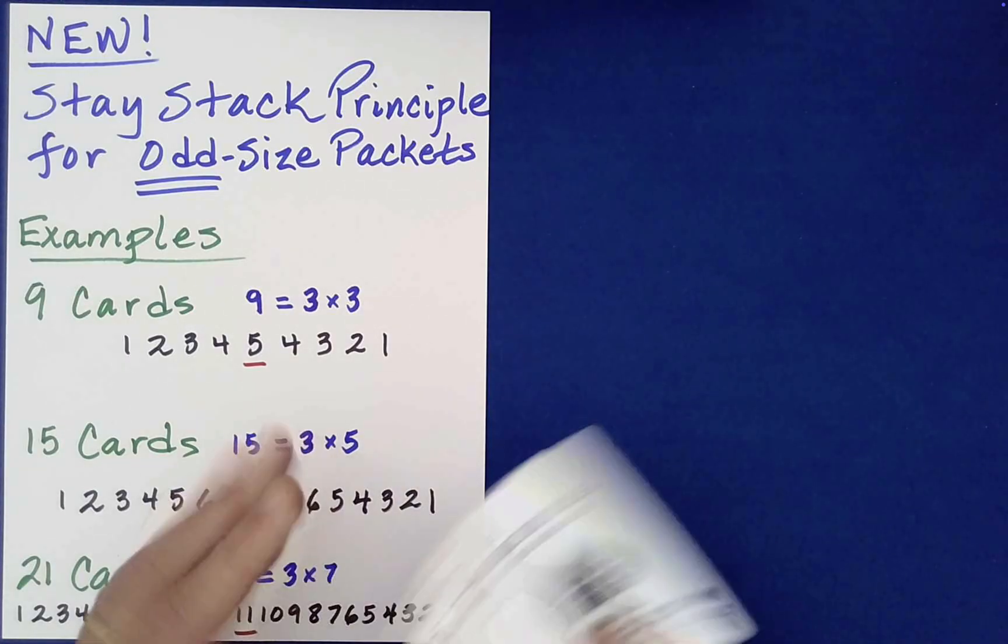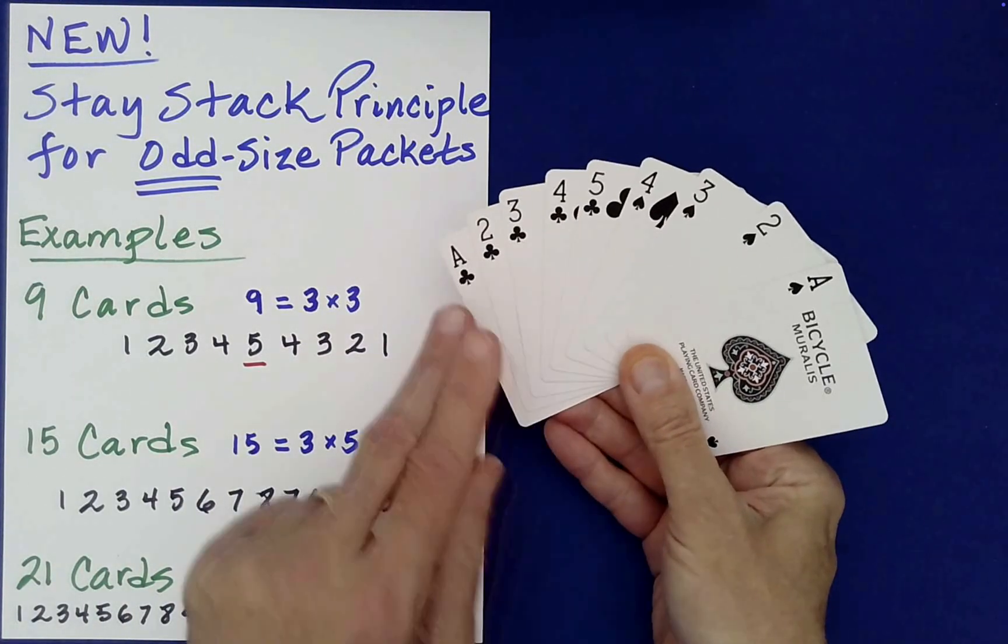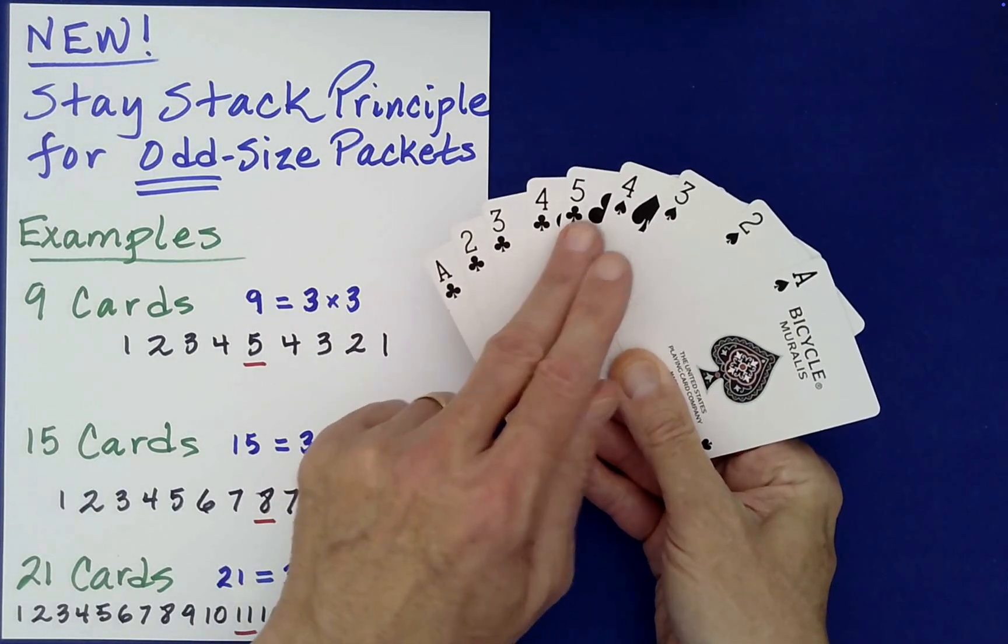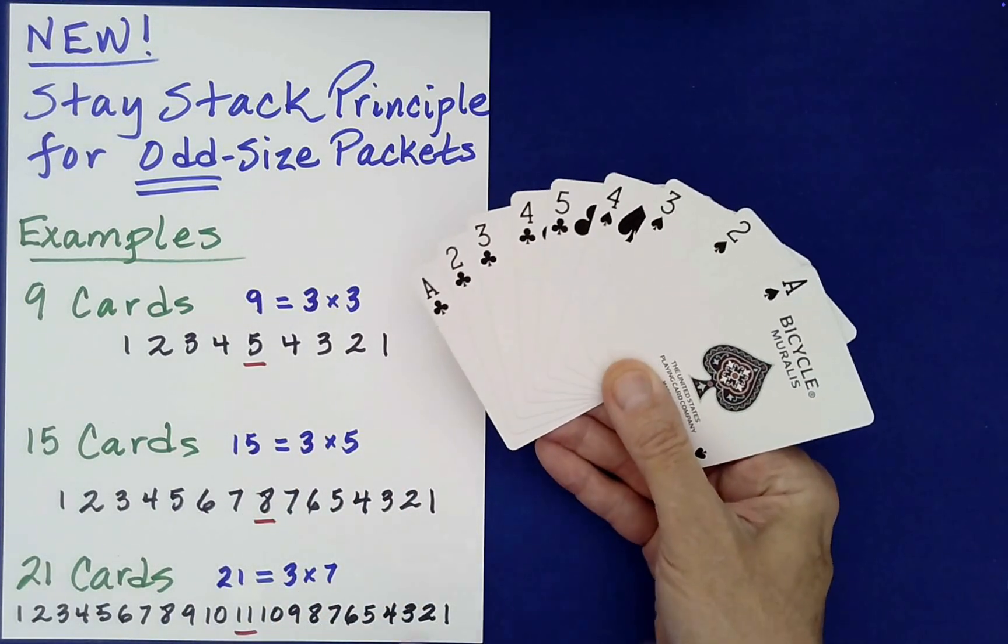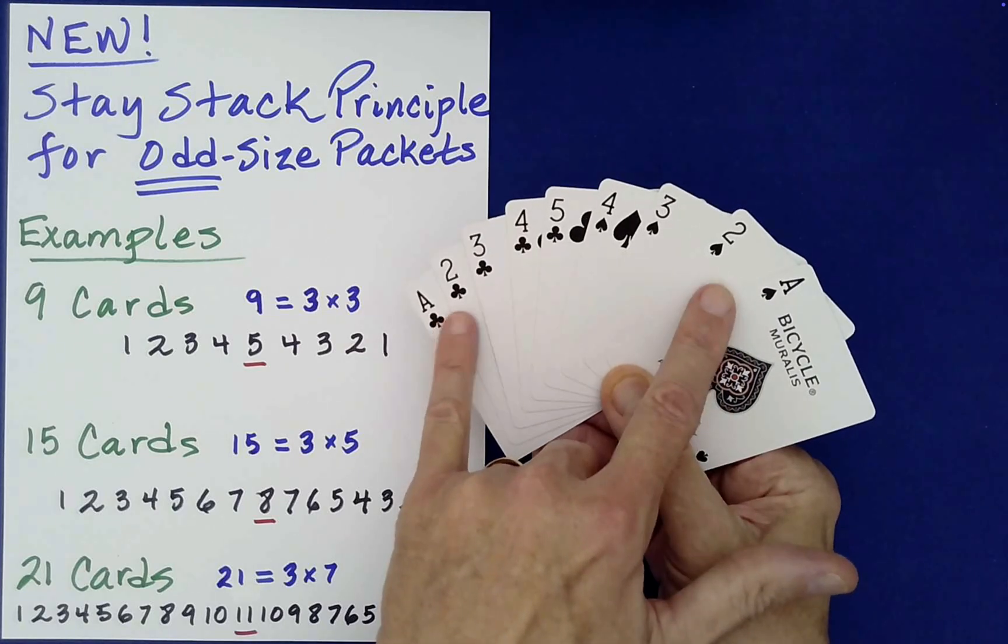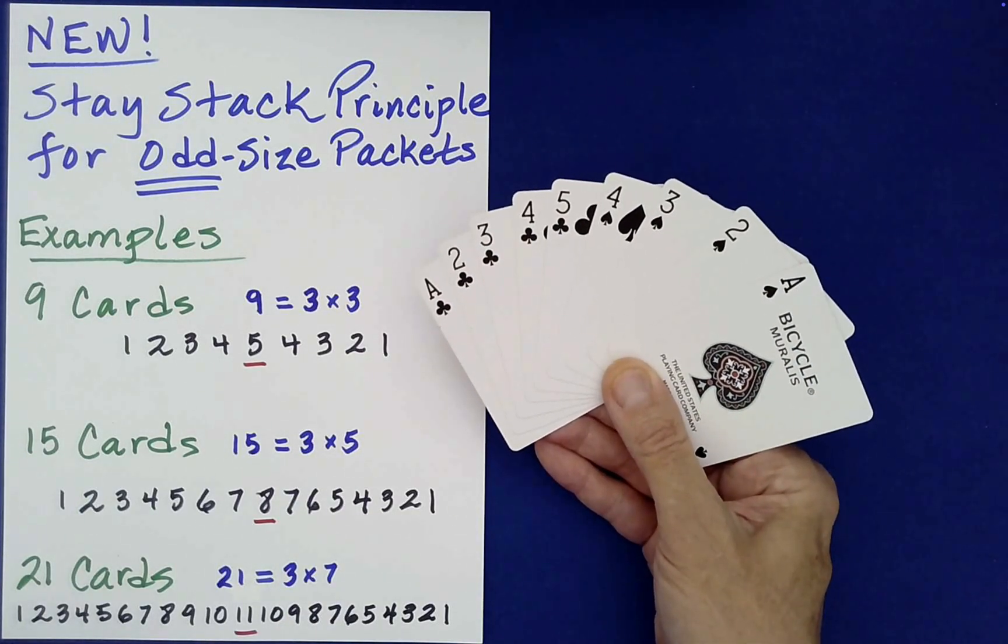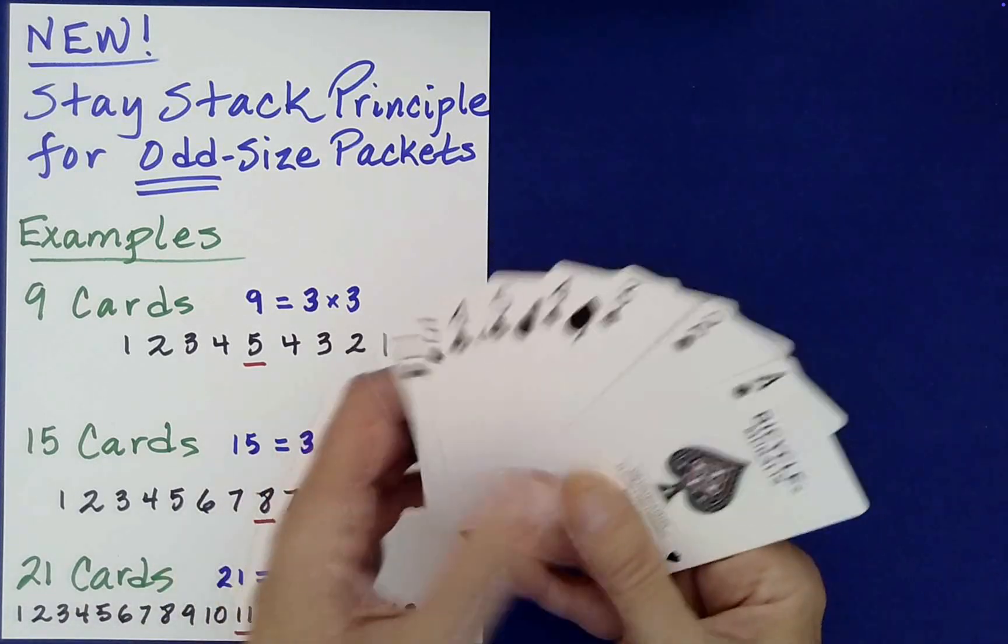So what I want to show you here is we have nine. In fact, let me just bring out a little write up that will help us as well. So with nine cards, as we just had, we have ace, two, three, four, five, four, three, two, one. So this is mirrored as you come in from the outer edge to the middle and the five is a lone card there.